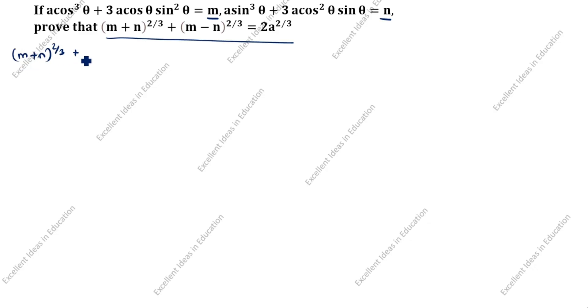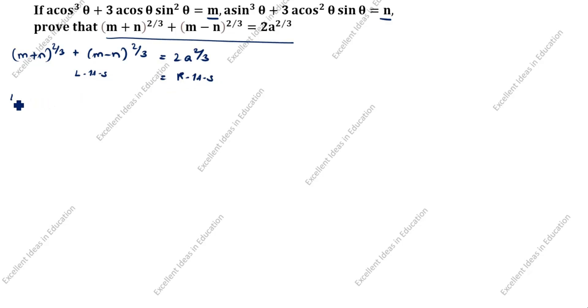What is given in this question? The values of m and n are given, and we need to prove this identity. What we will do is substitute the m and n values into the expression. We will take the LHS: (m+n)^(2/3) + (m−n)^(2/3), and work to prove it equals 2a^(2/3).